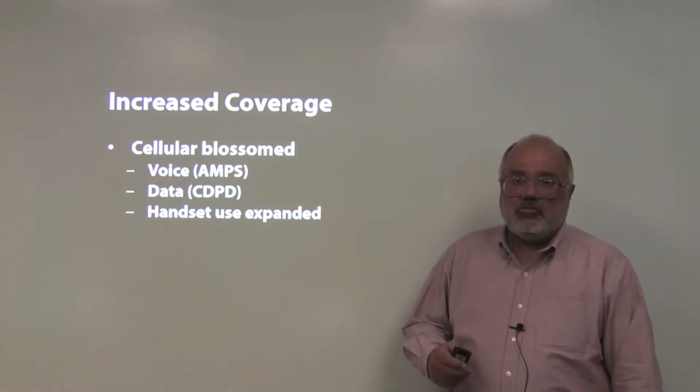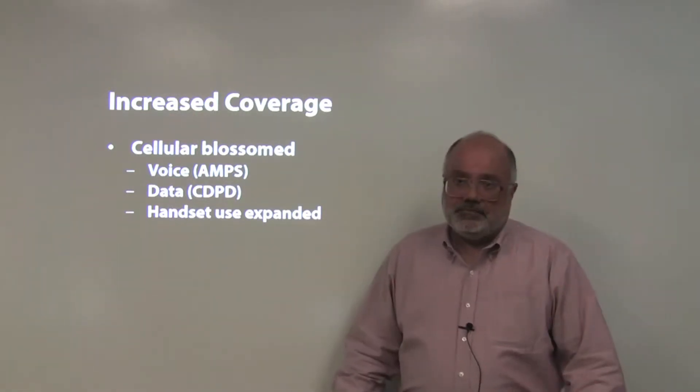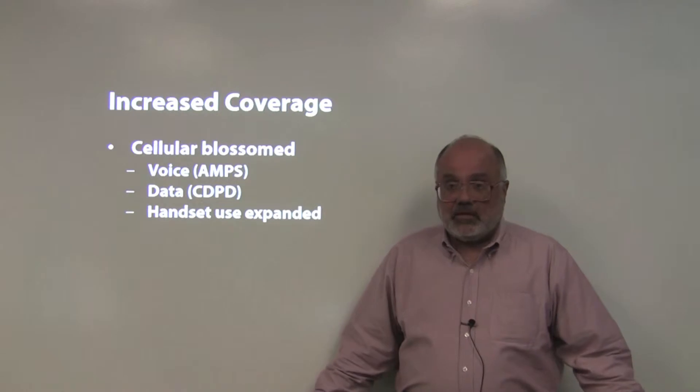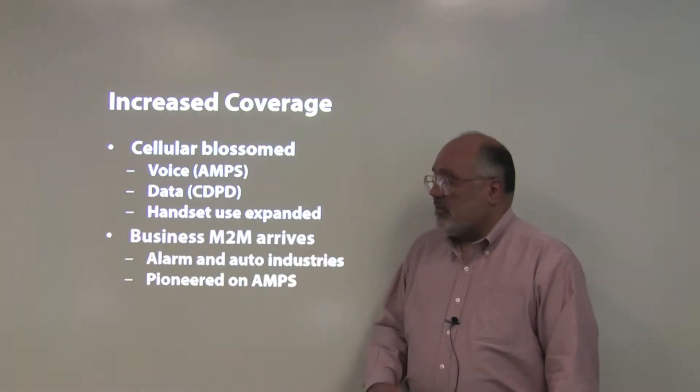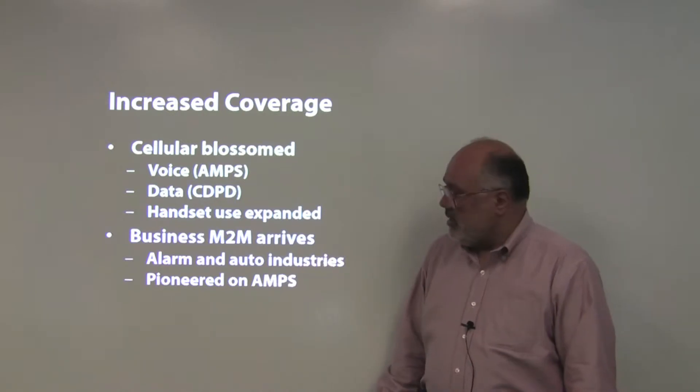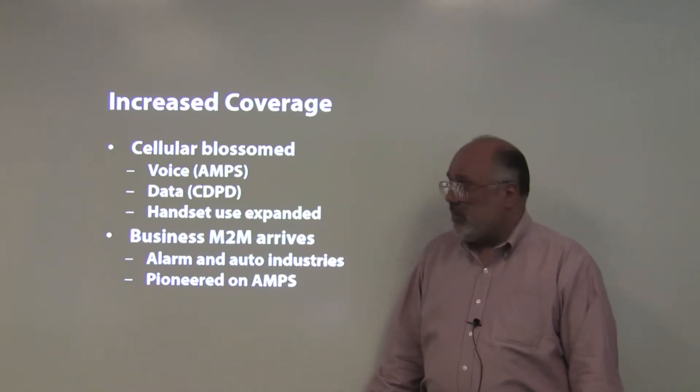Now, what was needed to grow the network deployments for machine-to-machine as we know it today? Cellular. When it came along, you had handsets for voice, CDPD on the analog amp system for data, and handset use expanded. Carriers increased coverage, not only within cities but outside cities. That's when the first business M2M applications arrived. Still wasn't quite called M2M in the mid-1990s. The alarm and auto industry took tremendous advantage. We pioneered a solution on amps that many used in the mid-1990s and stayed in use for many years.